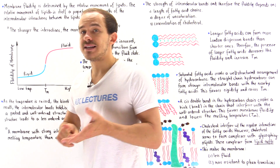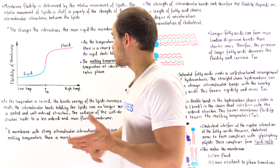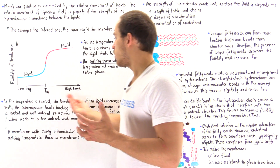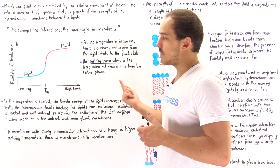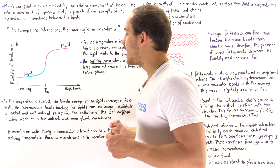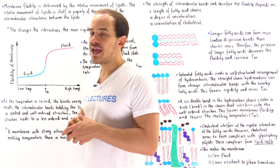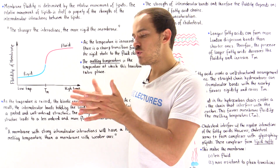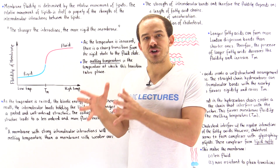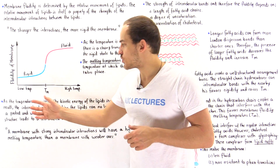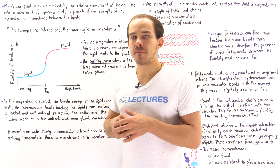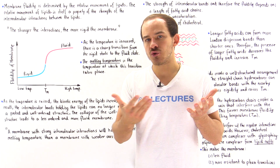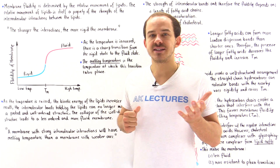The x-axis is the temperature, going from low on the left to high on the right. Suppose we start with a rigid membrane at a low temperature — what begins to happen as we increase that temperature?